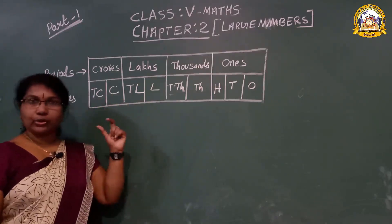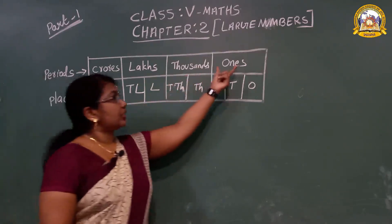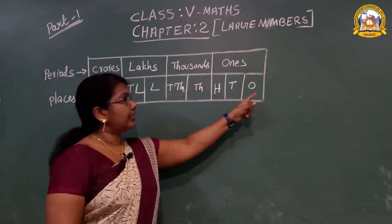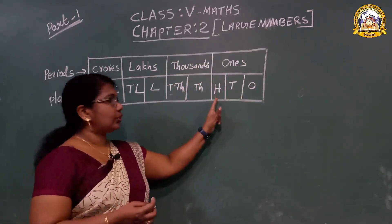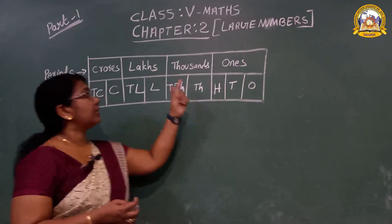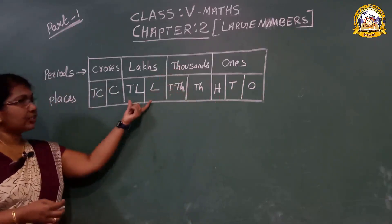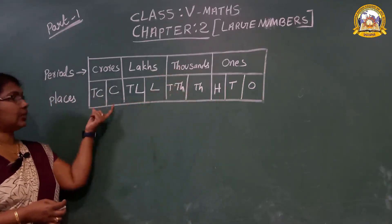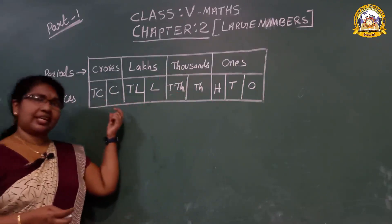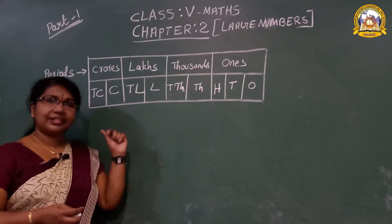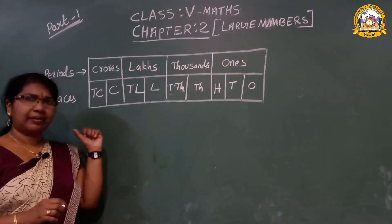In class you studied how to use commas. First period has 3 places, so 3 digits first, then thousands 2, lakhs 2, crores 2. Now which is the largest 9-digit number?